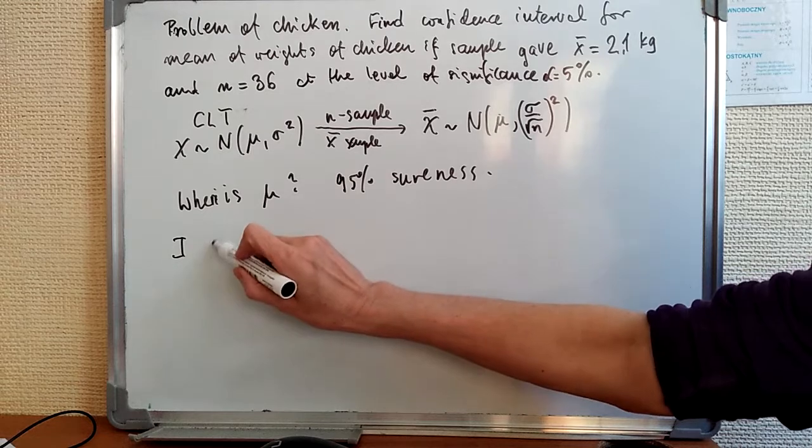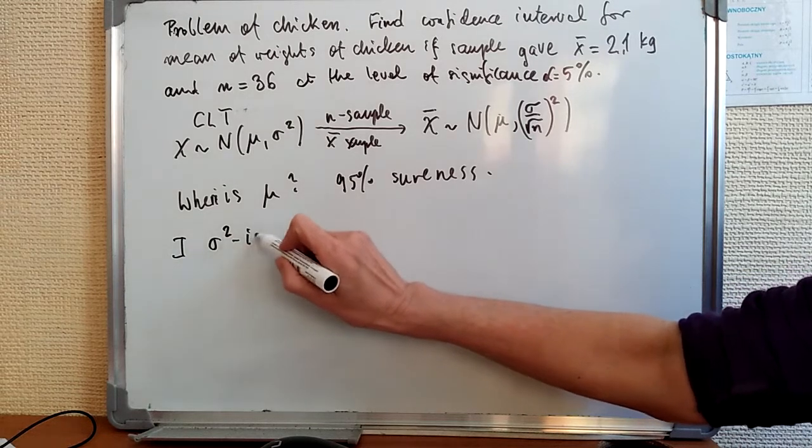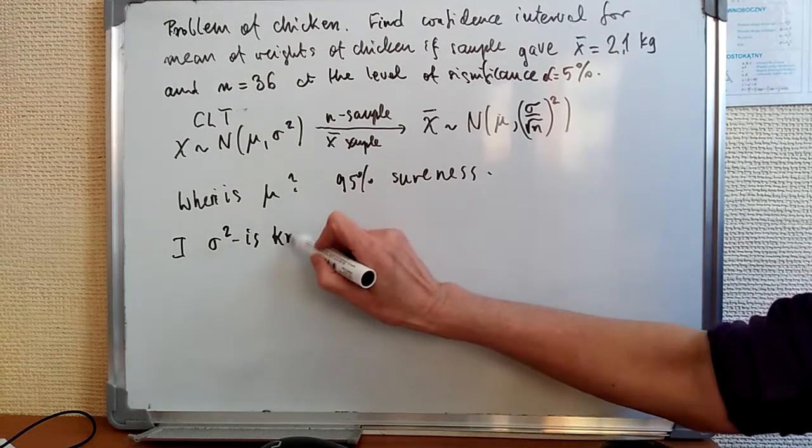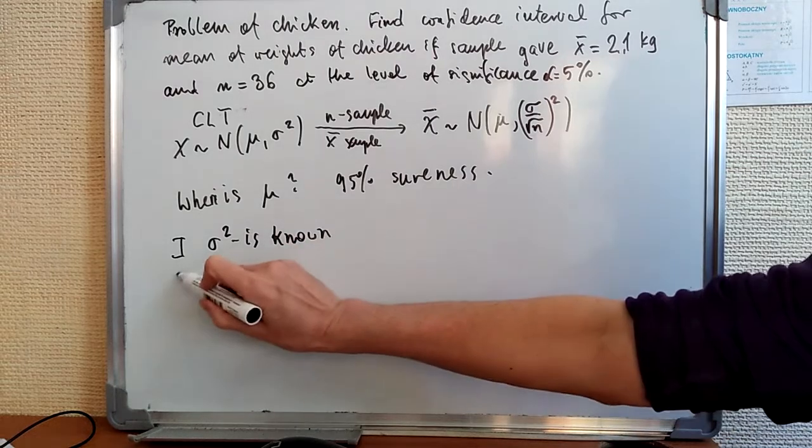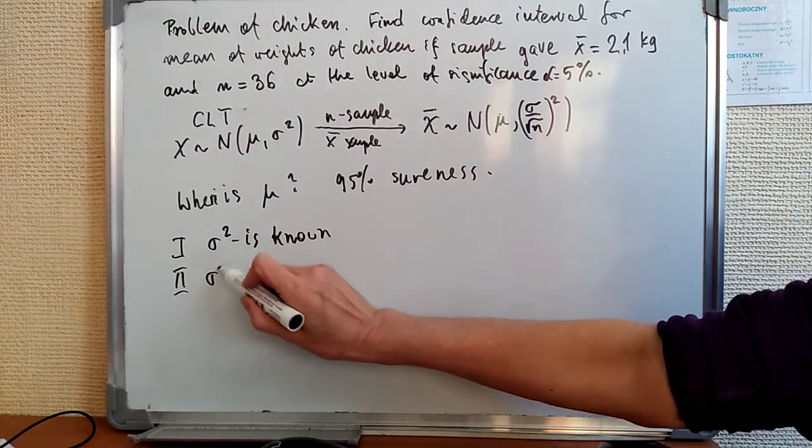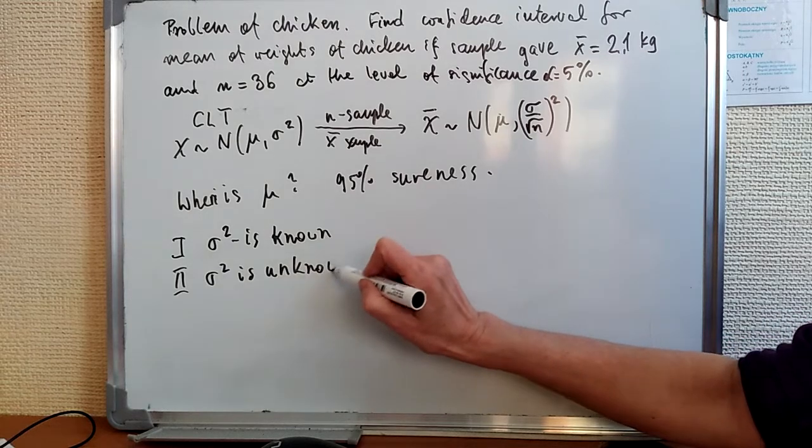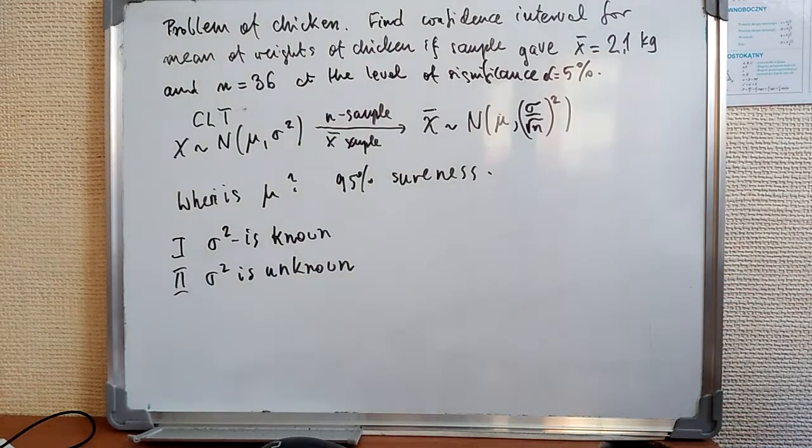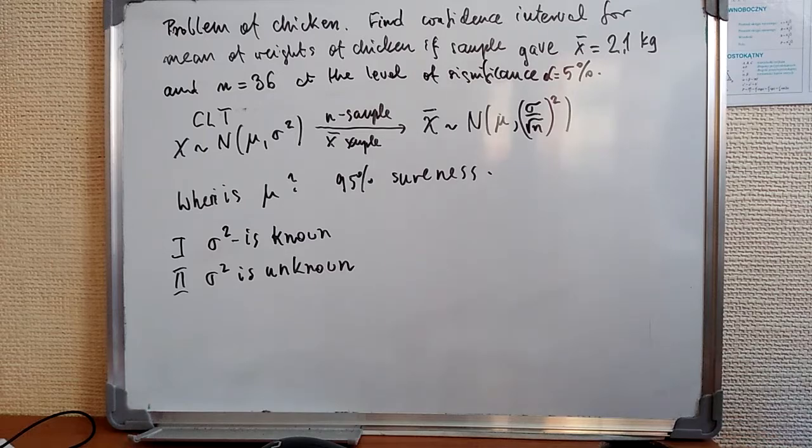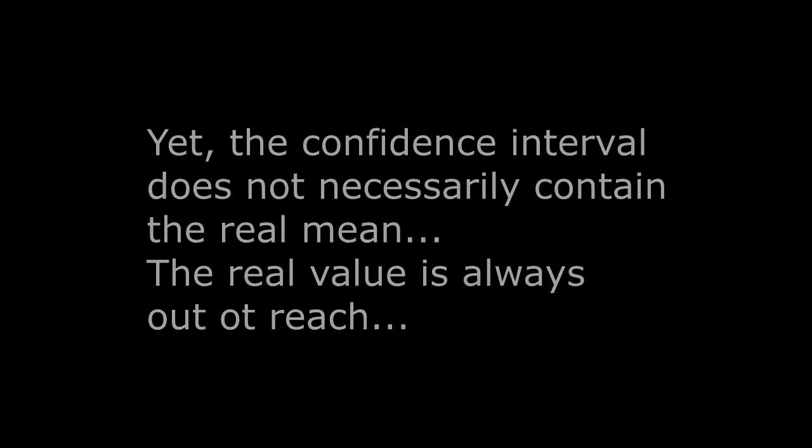And there are two cases we might assume. The first case is that sigma squared is known. And the second case, sigma squared is unknown.